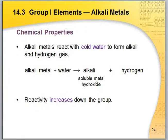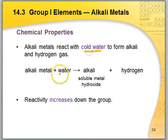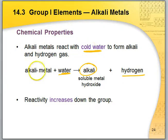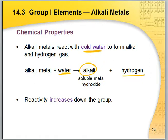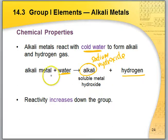Now for the specific chemical properties. First, alkali metals react with cold water. Alkali metal plus cold water gives an alkali plus hydrogen gas. An example of an alkali is sodium hydroxide. Alkalis are soluble metal hydroxides. You throw any alkali metal into water and you get a soluble metal hydroxide with hydrogen gas.